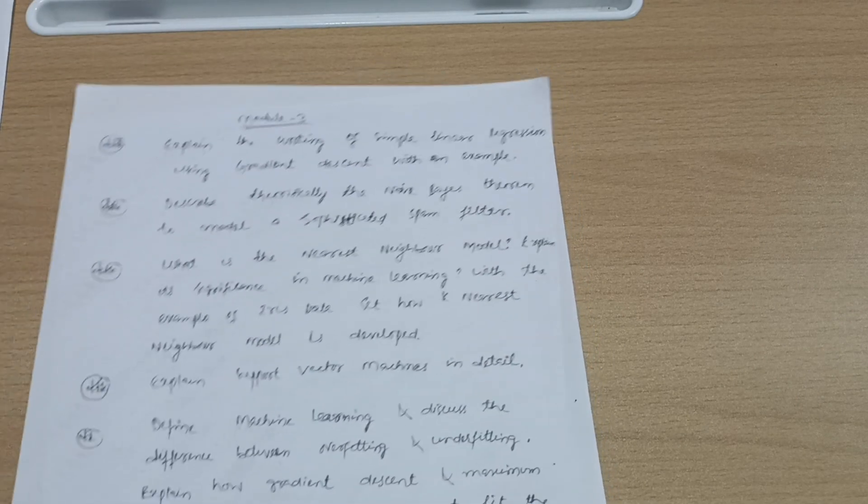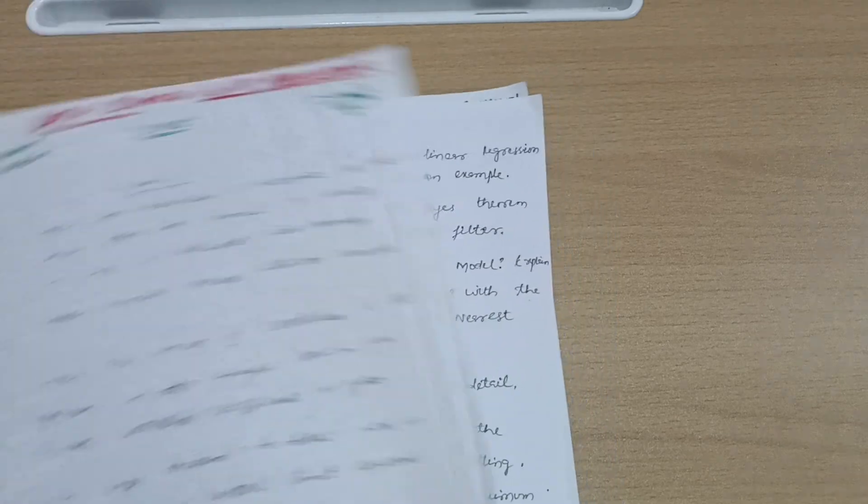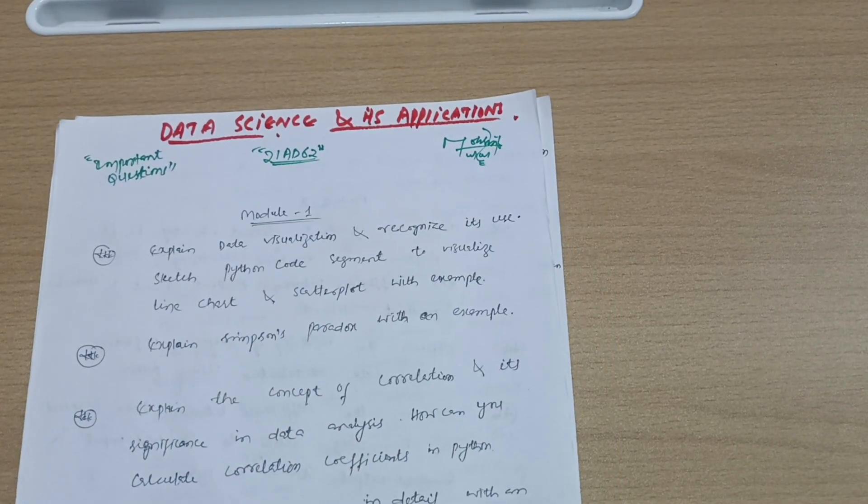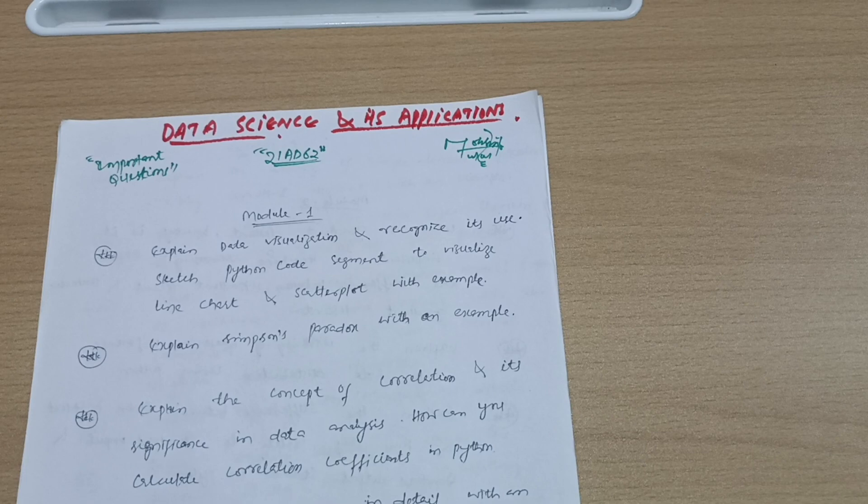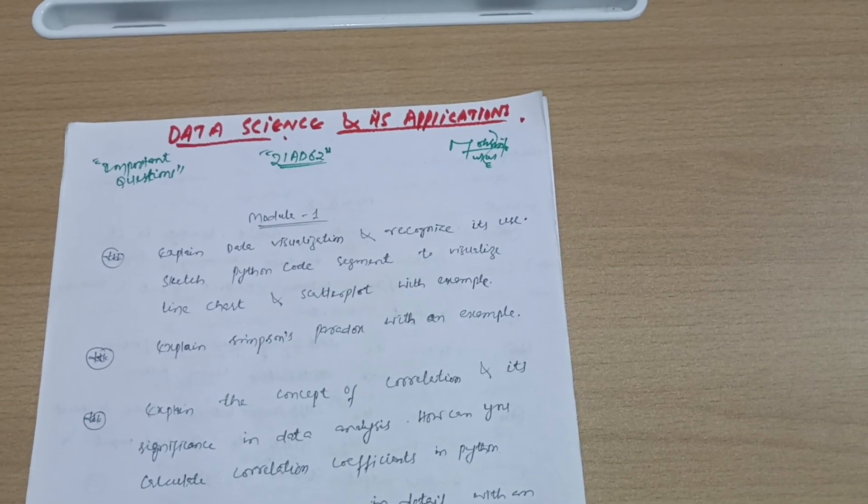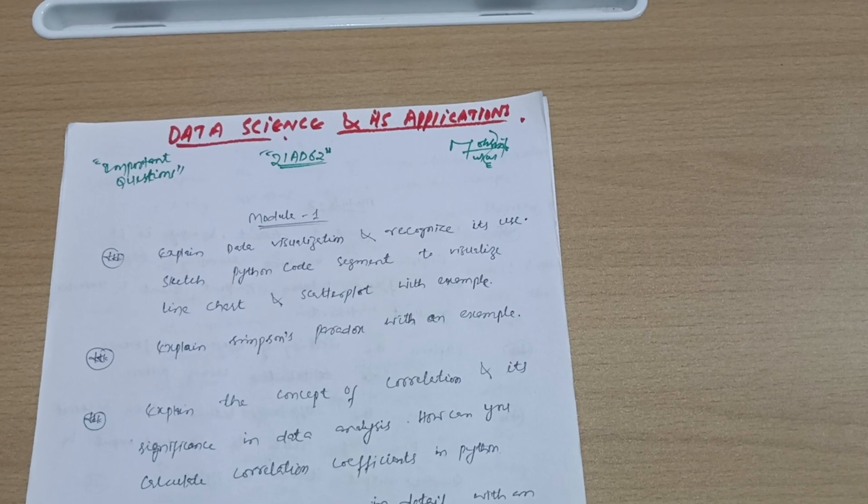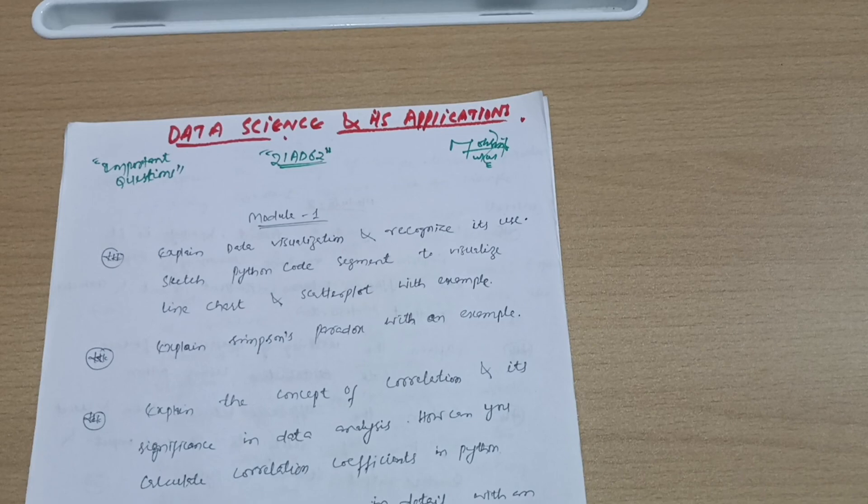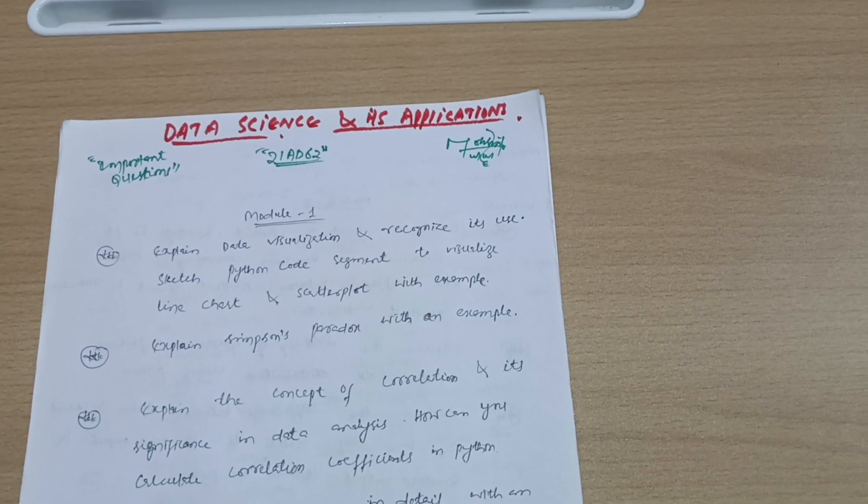You can also go through the programs by referring to model question papers or whatever programs you have studied in your college—those are also important to cover if you want to score in this subject. If you want to simply pass, you can go through only theoretical portions to tackle the subject, but this is a programmatic subject.